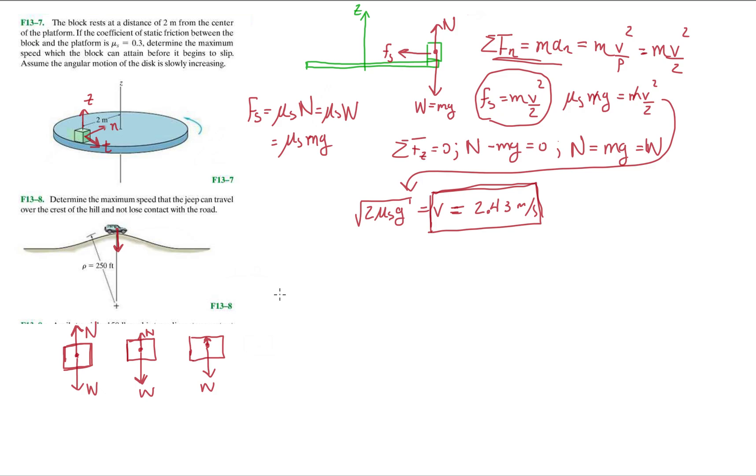The free body diagram of this car will be the weight. We're trying to go with this extreme scenario where there's no normal, to figure out what's the fastest velocity that you can go when the normal disappears. That'll be forces in the normal direction, which is mg times the normal acceleration, which is again V squared over rho. The m's cancel out.